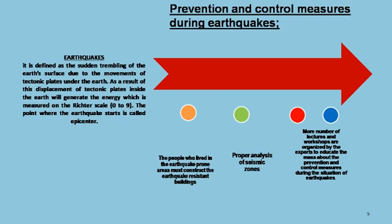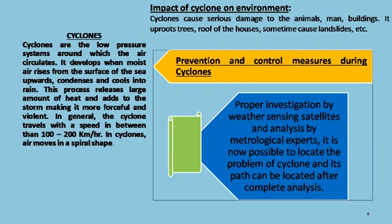For prevention and control during earthquakes, the first measure is that people living in earthquake-prone areas must construct earthquake-resistant buildings — prevention is better than cure. The second is proper analysis of seismic zones. The third is organizing lectures and workshops by experts to educate the public about prevention and control measures during earthquakes.